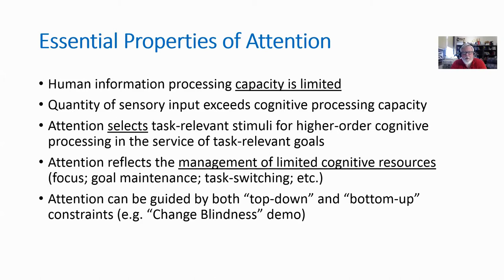We begin with the known fact that human information processing capacity is quite limited — we can only process so much information per unit time, and this is well documented and well quantified. However, our senses — vision, hearing, taste, touch, smell — bombard our brain with much more information than our cognitive systems are able to process at any given time. So the brain needs some way to manage this overflow of information coming from the senses, and that's what the construct of attention is all about.